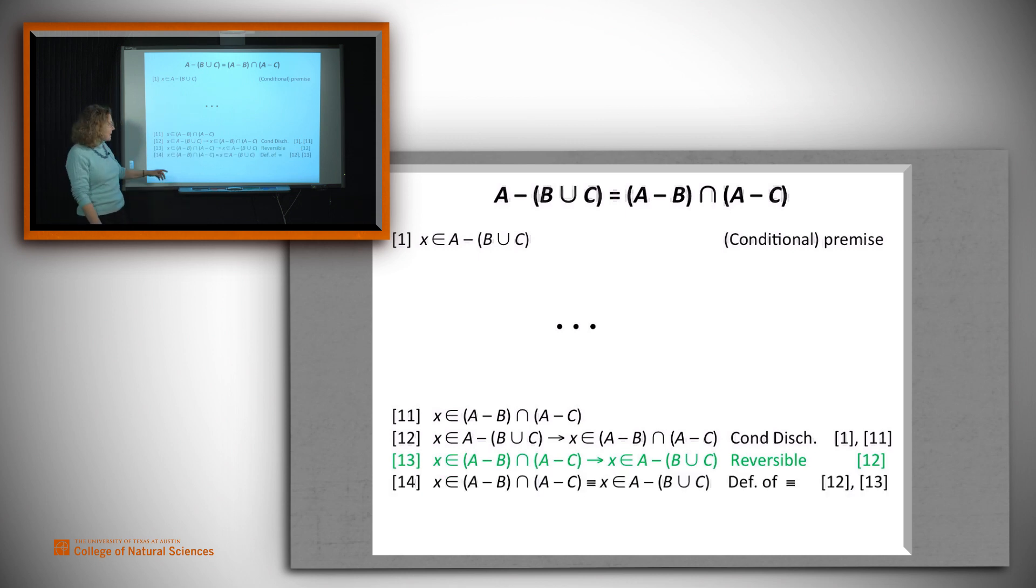Assuming we can do that, then we say we've got that being in set one implies two, being in two implies one. And by the definition of equality, if we've got two directions, we've got a definition of equivalence, then we've got equivalence. So the claim that X is in one of them is equivalent to the claim that it's in the other of them.